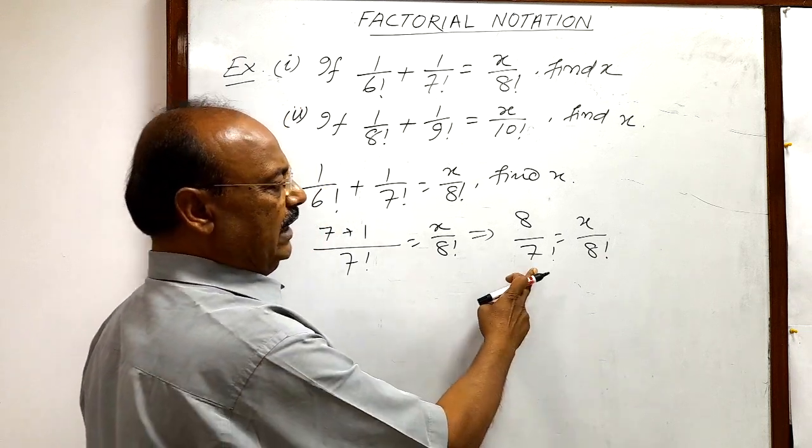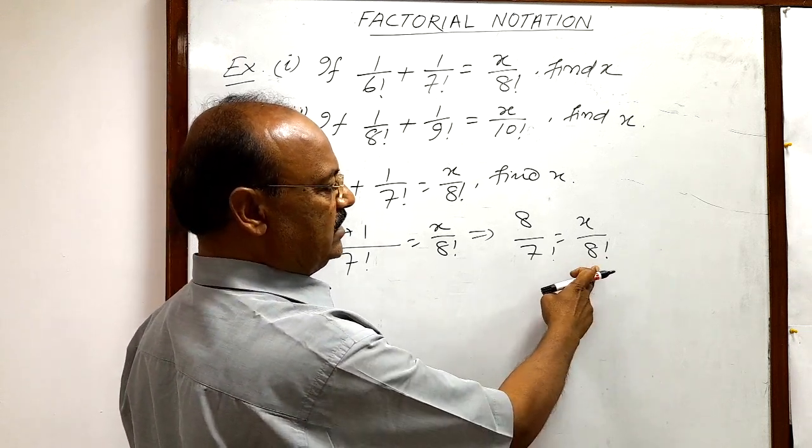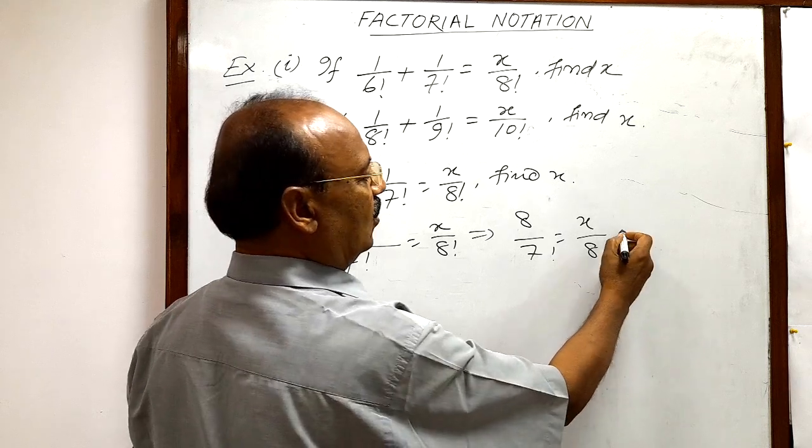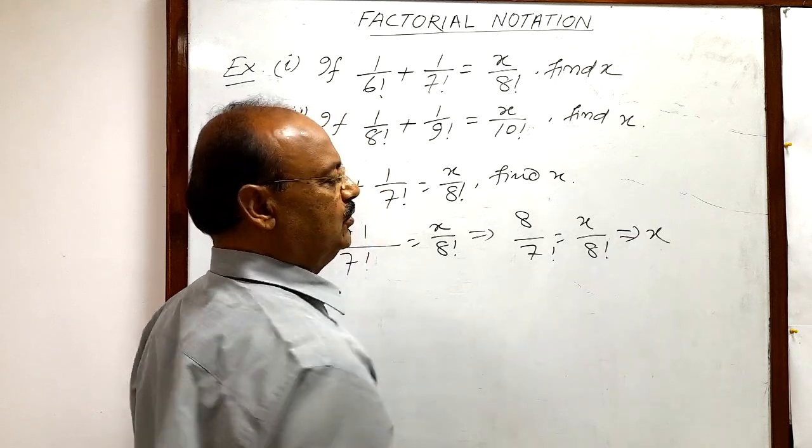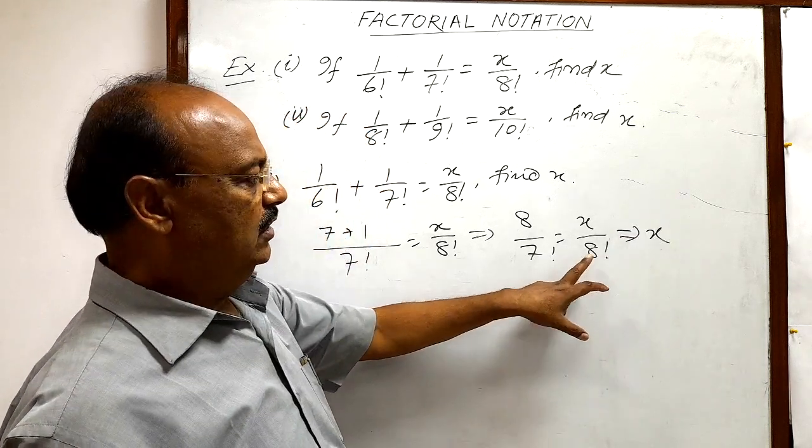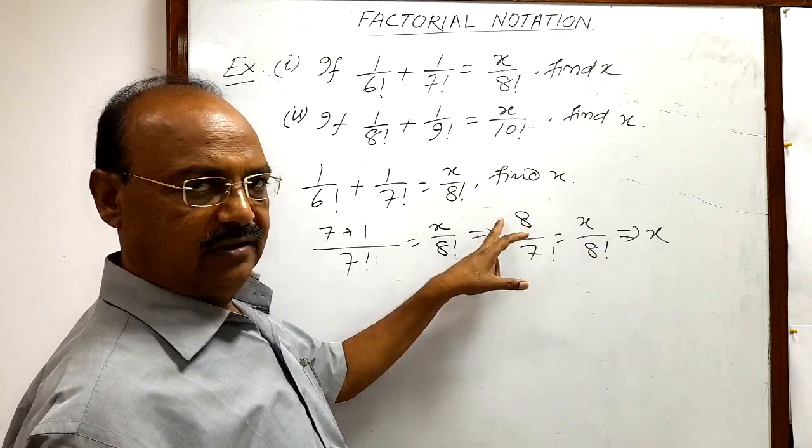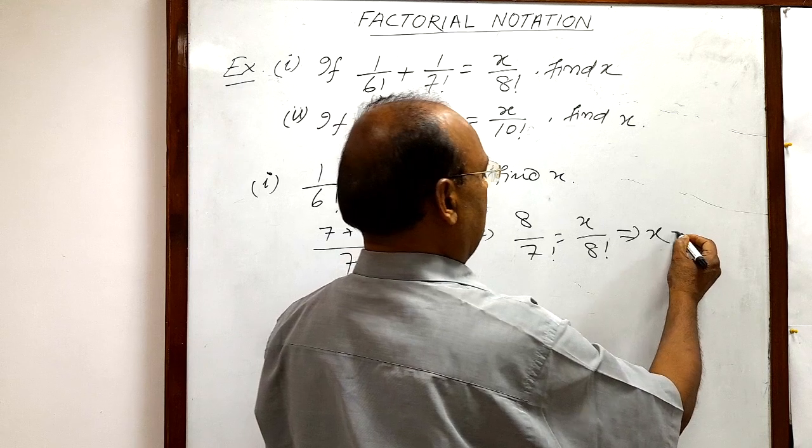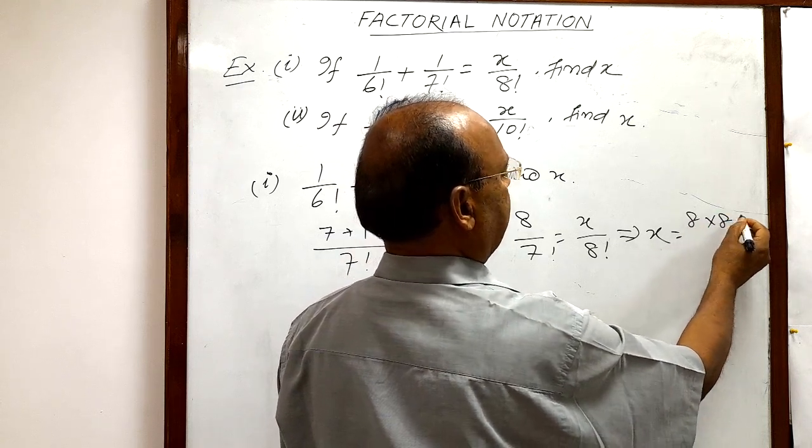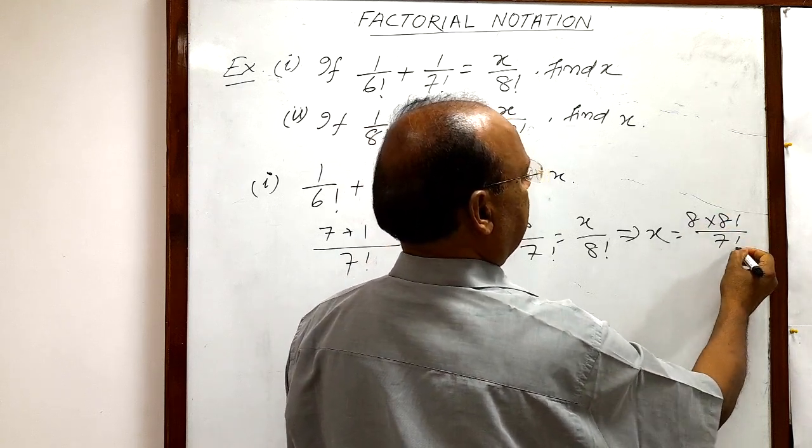So this 7 factorial will be cancelled out with this 8 factorial, isn't it? Or we can write x is equal to by cross multiplication, by transposition, this 8 factorial can be written in the numerator, this side. So x will be equal to 8 into 8 factorial divided by 7 factorial.